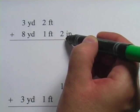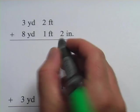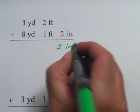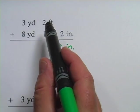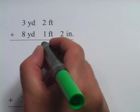In this column, I've got two inches here, but nothing up here, so all I do is just bring this two inches down. The next unit over is feet. I've got two and one, well two plus one is three feet,